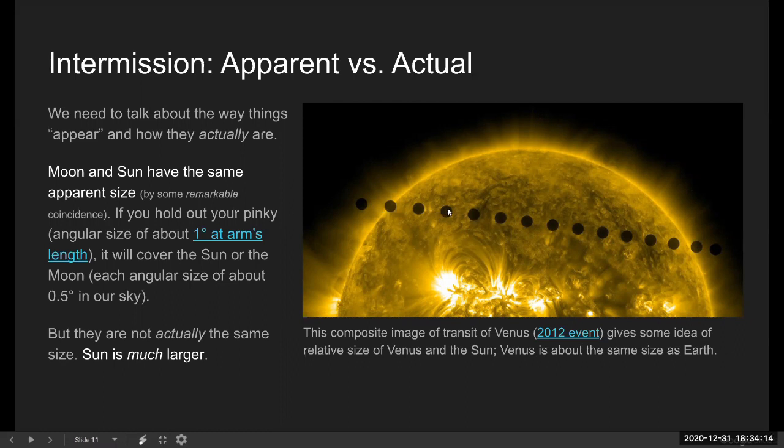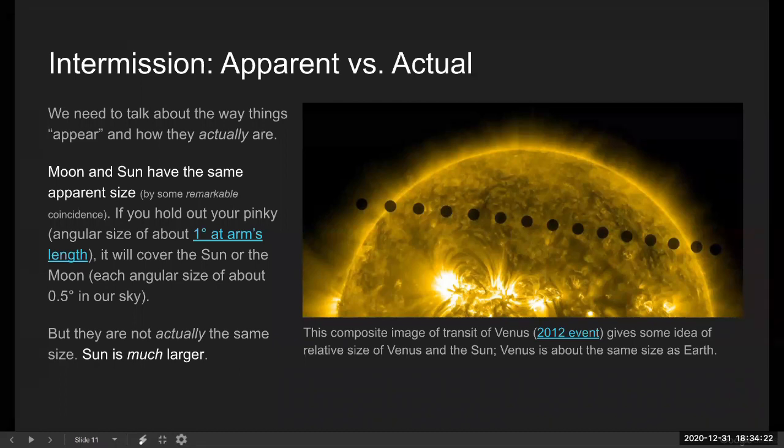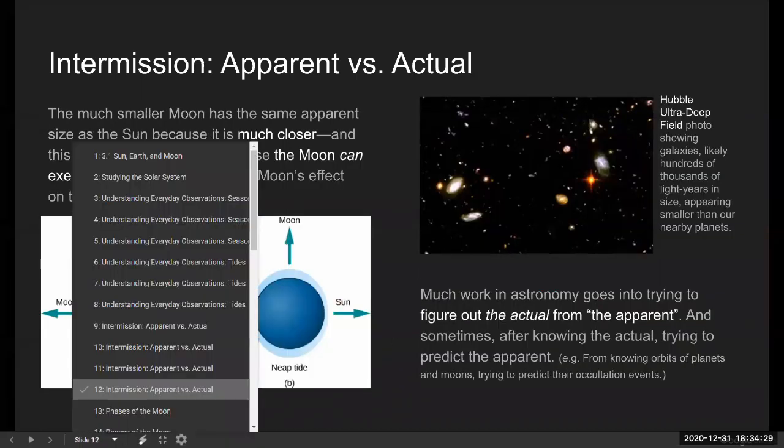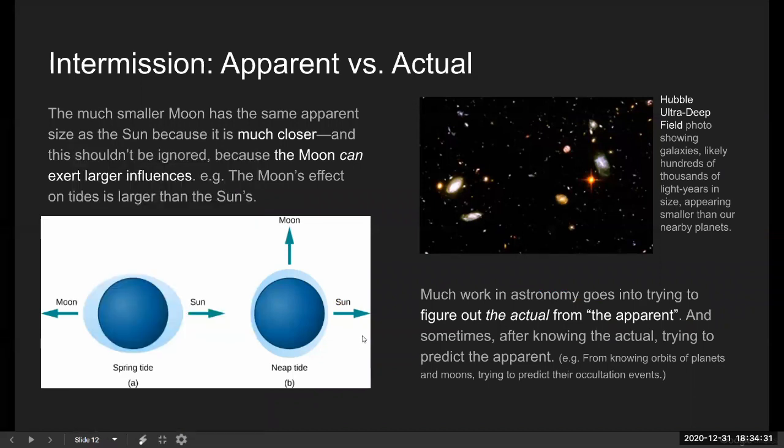And even this shows Venus to be larger than it actually is because Venus is closer to us than the sun is to us. So the important point that I wanted to end this intermission with is really this point here. Much work in astronomy goes into trying to figure out the actual from the apparent.